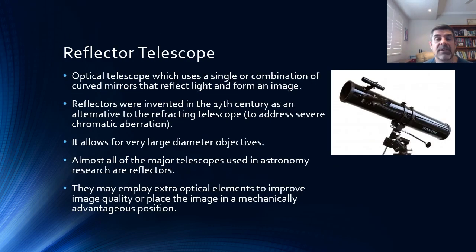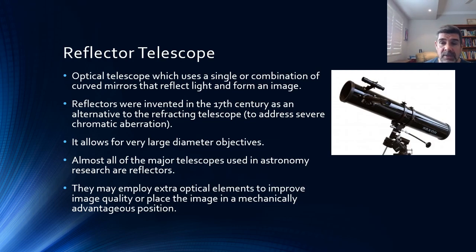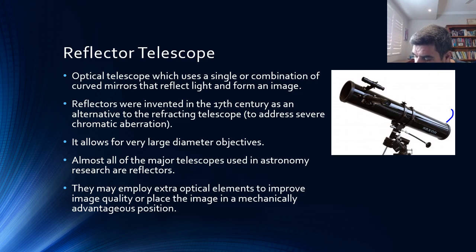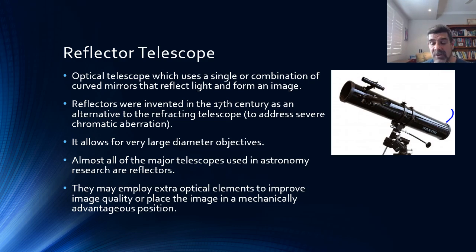The other type of optical telescope is the reflector telescope. This is another optical telescope, but instead of using lenses, it uses mirrors. The advantage of mirrors is that one of the problems with refractors was that lenses would start to collapse under their weight when they got too large, causing the image to distort — kind of like looking at something that's constantly out of focus.